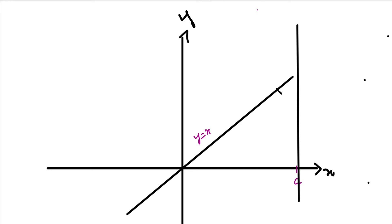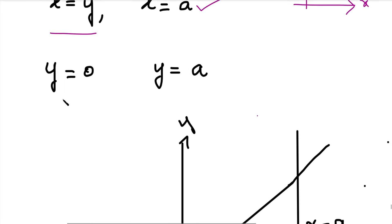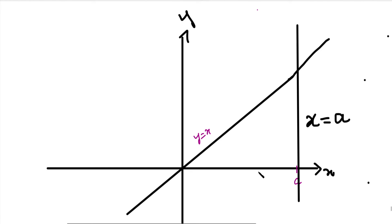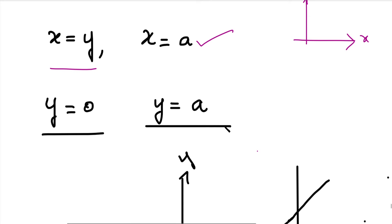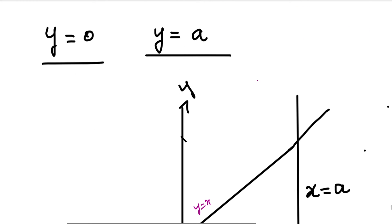And already y = x intersects the line x = a. The third line is y = 0, which is the x-axis itself — only where y value is 0. Finally, the fourth line is y = a, a horizontal line parallel to the x-axis.